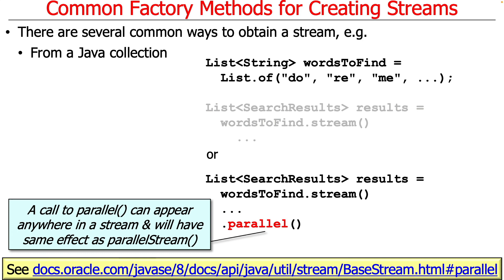The important thing to remember here is that whatever goes last is the way the entire stream is processed. So it might look like it's starting out as a sequential stream and then being converted along the way into a parallel stream, but that's actually not how it works. Remember, streams are lazy. So when it hits the terminal operation, it'll look and determine whether this is a sequential or parallel stream, and that is what it'll run as in its entirety.